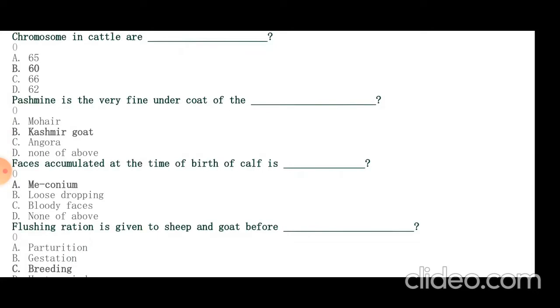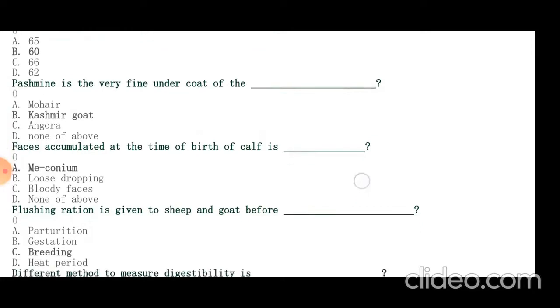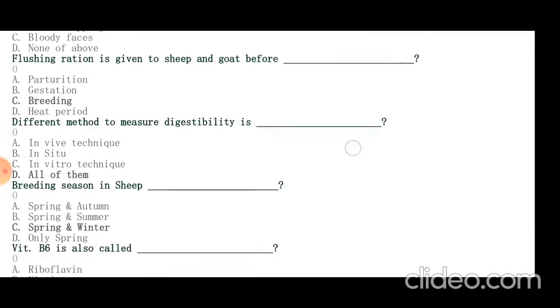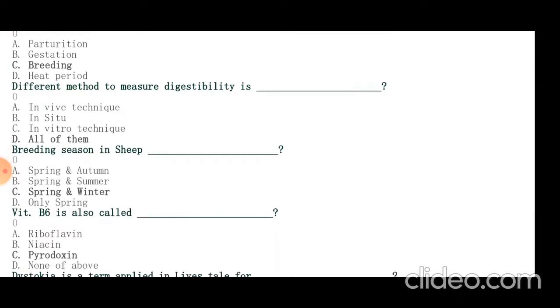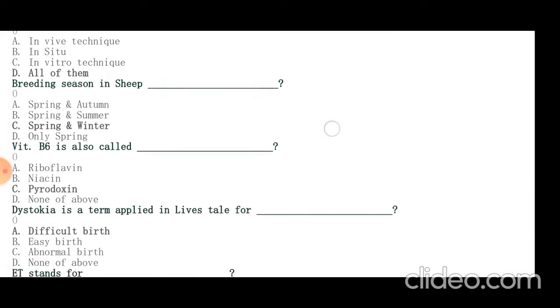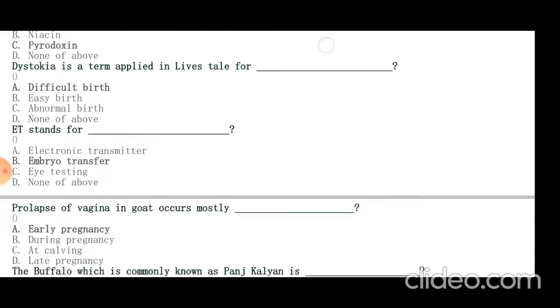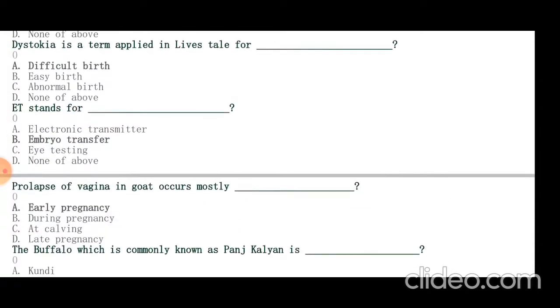Flushing ration is given to sheep and goat before breeding. Different methods to measure digestibility are in-situ, in-vivo, and in-vitro. Breeding season in sheep is spring and winter. Vitamin B6 is called pyridoxine. Dystocia is the term applied to difficult birth. ET stands for embryo transfer. Prolapse of vagina in goat occurs mostly in early pregnancy.